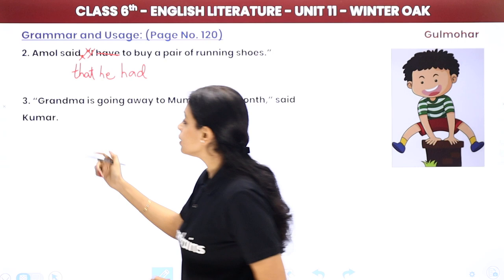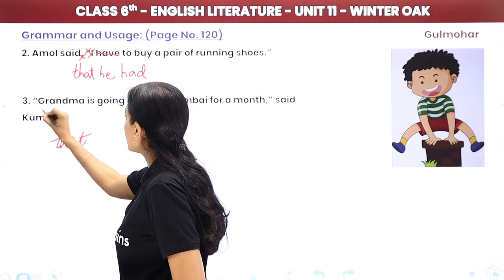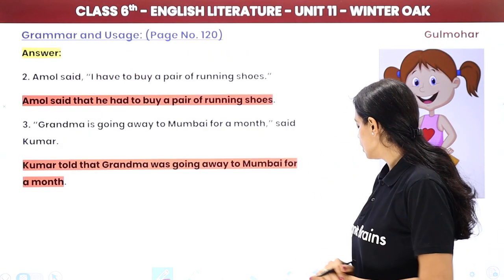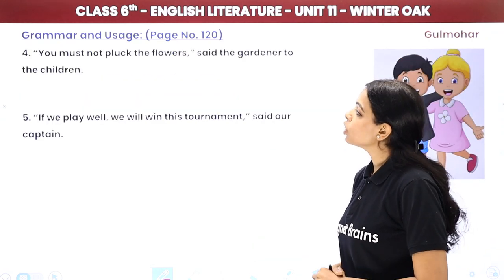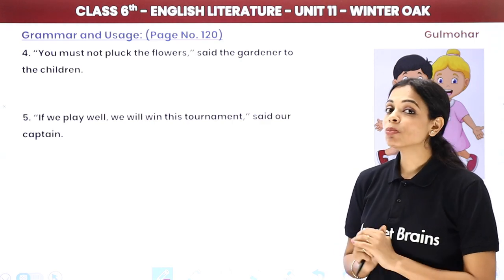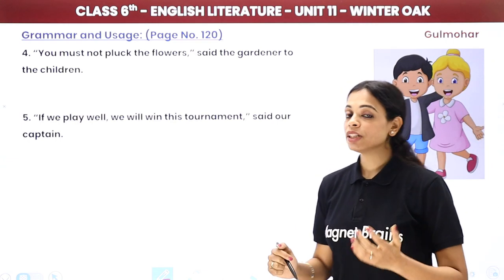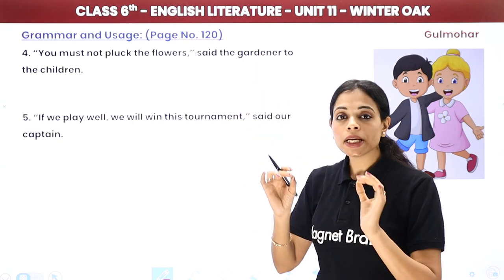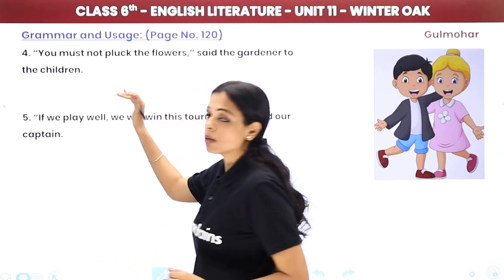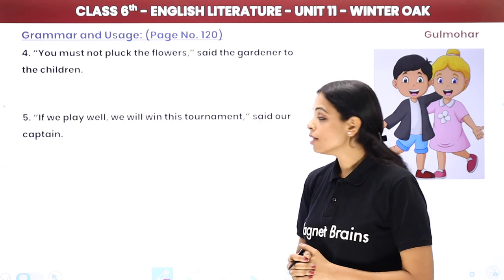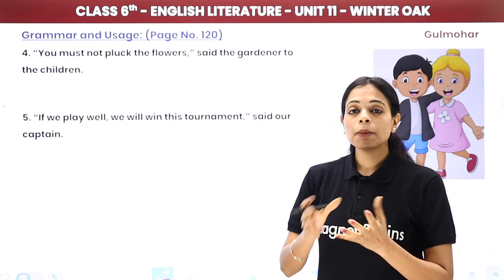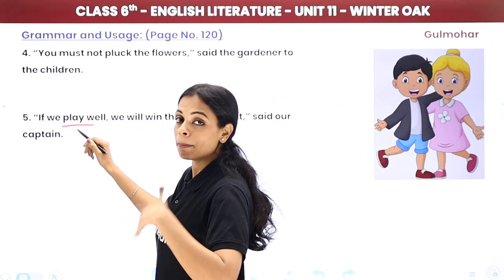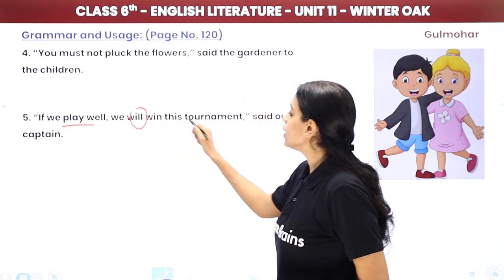Next sentence: Kumar told that Grandma was going away to Mumbai for the month. Then: 'You must not pluck the flowers,' said the gardener to the children. In reported speech: The gardener prohibited the children to pluck flowers. Next: 'If we play well, we will win this tournament,' said our captain. In reported speech: Our captain said that if we played well, we would win that tournament.